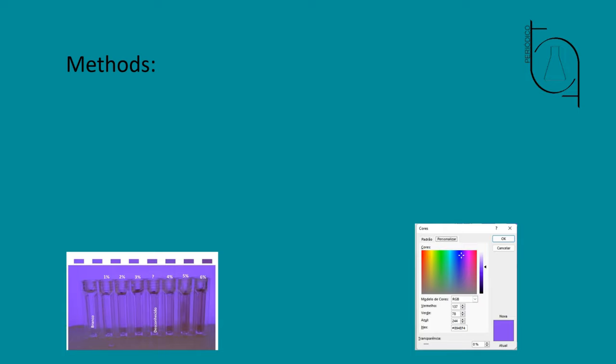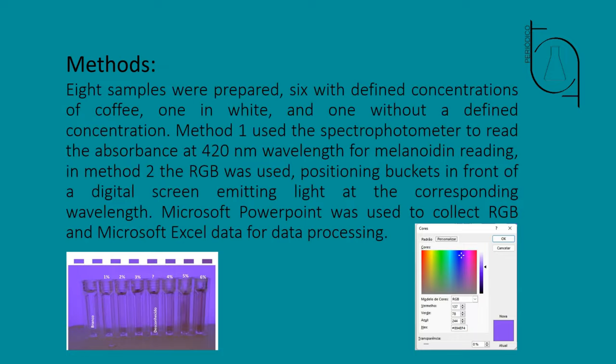Methods. Eight samples were prepared: six with defined concentrations of coffee, one in white, and one without a defined concentration. Method one used the spectrophotometer to read the absorbance at 420 nanometers wavelength for melanoidin reading. In method two, RGB was used, positioning buckets in front of a digital screen emitting light at the corresponding wavelength. Microsoft PowerPoint was used to collect RGB data, and Microsoft Excel for data processing.